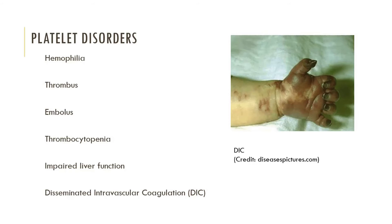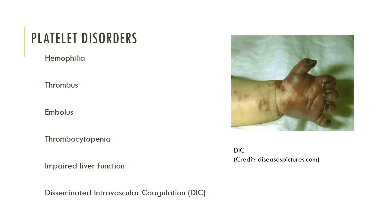Impaired liver function results in vitamin K deficiencies and therefore causes impaired coagulation. Disseminated intravascular coagulation, or DIC, involves widespread clotting that reduces the amount of platelets and fibrinogen available in the blood. The liver cannot produce more fibrinogen fast enough to keep pace with the clotting, so clotting declines and uncontrolled bleeding can result.